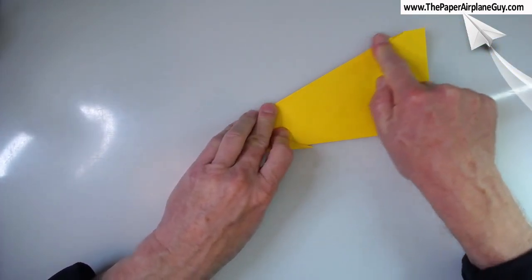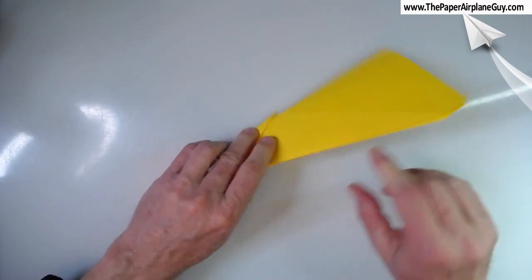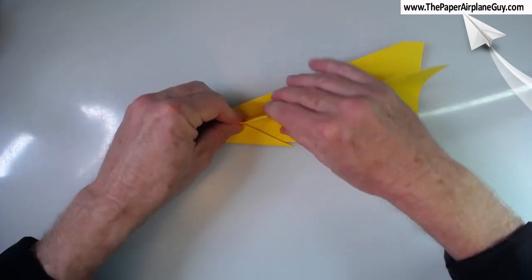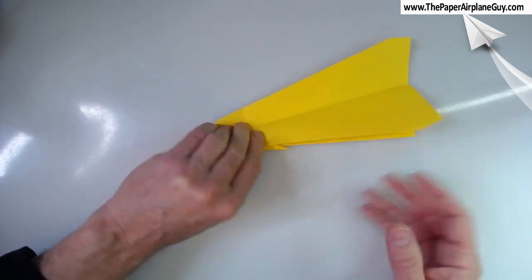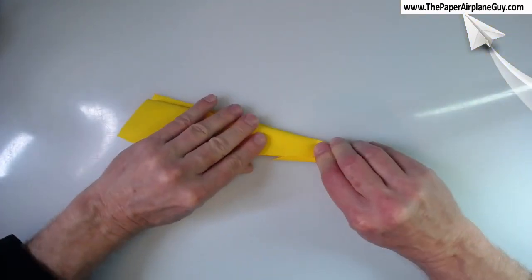And if you've got some bubbling here, just go ahead and sweep that out. It's not going to matter at all with this design. Sweep that out. Take this long edge down to the center crease as well. Flip it over to the same thing to the other side.